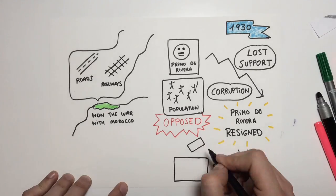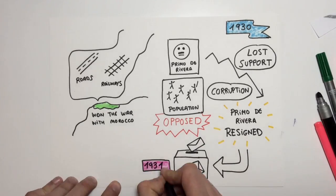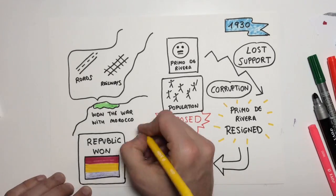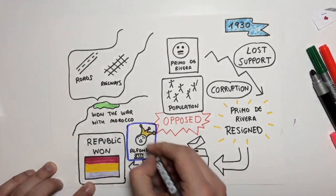The general elections were held in 1931. The political parties that supported a republic won, and Alfonso XIII went to France into exile.